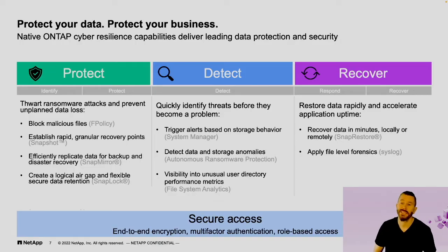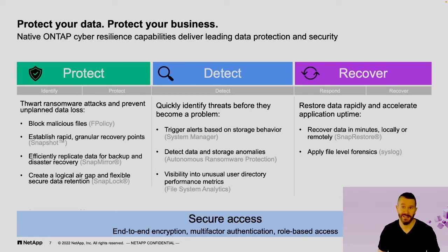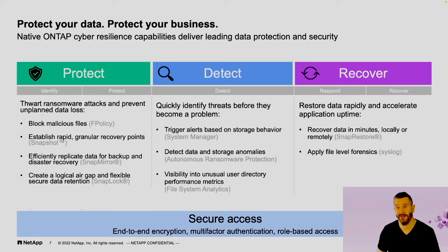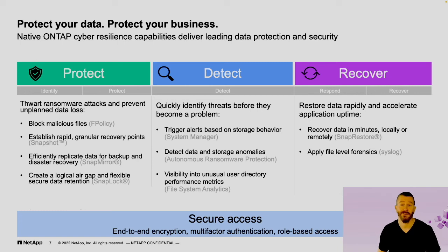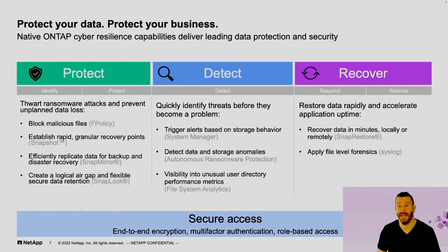When it comes to protecting data on ONTAP, we approach it with a method of protect, detect, and recover. So let's start with protect. This is to make sure that we can thwart attacks and protect the data from being destroyed or modified. This starts with things like blocking malicious files. Our FPolicy capabilities within ONTAP can prevent encrypted files from even being formed or malicious files from even being stored onto NAS shares.